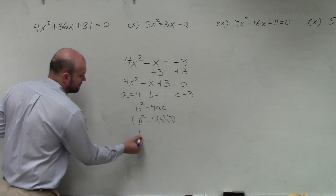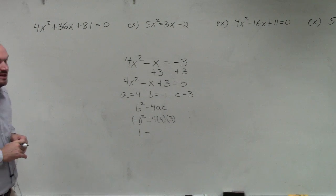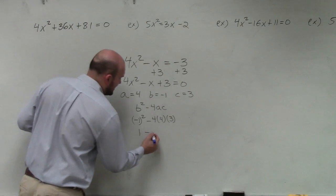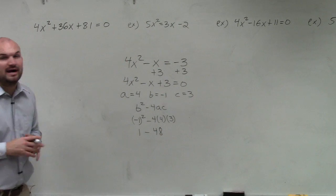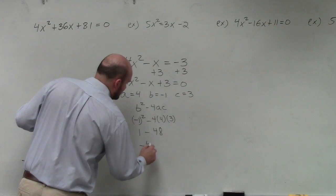So (-1)² is 1. Minus 4 times 4 is 16. Times 3 is going to be 48. 1 - 48 is going to be -47.